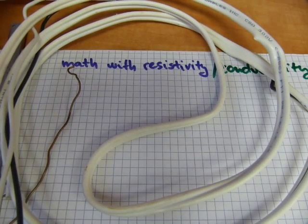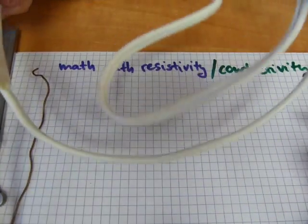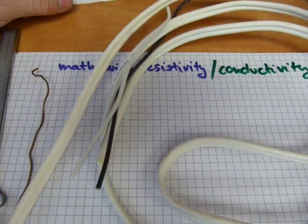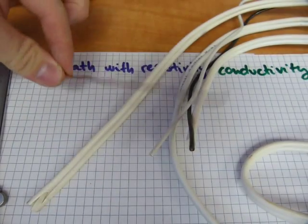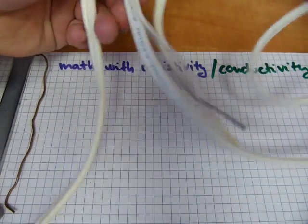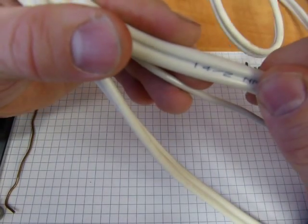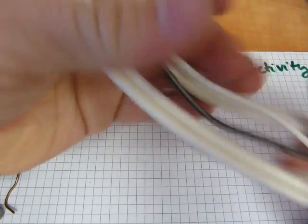In this video we'll do some math and calculation with resistivity and conductivity. I'm going to show you both using copper wire that I got the jacketing off. Standard 14 gauge, this is 14-2 house wire, 14 gauge North American wire gauge sizes.